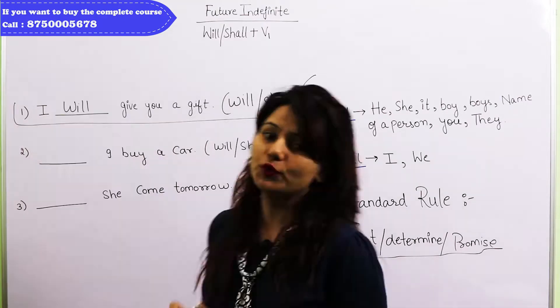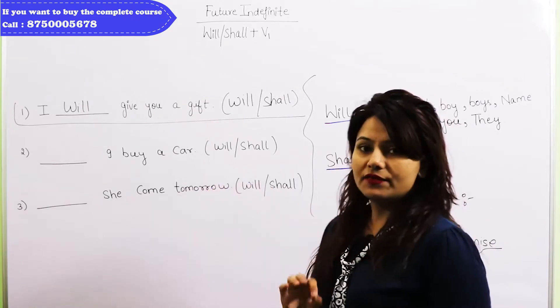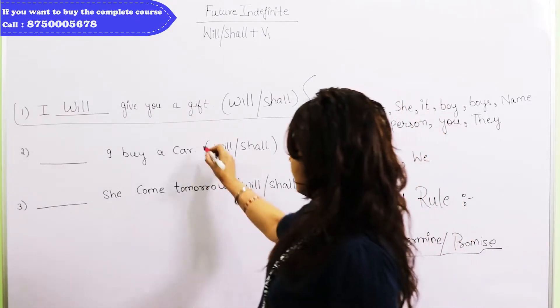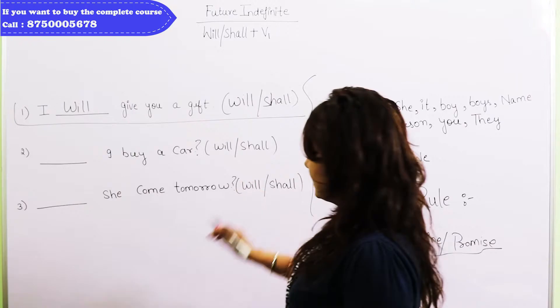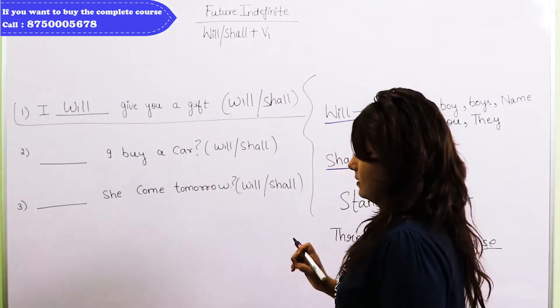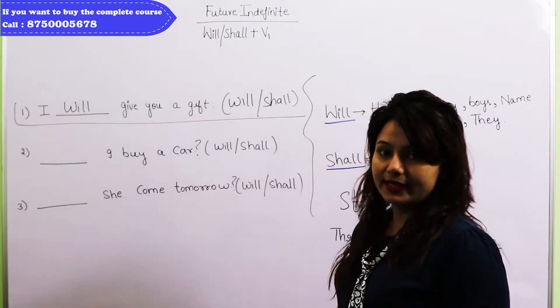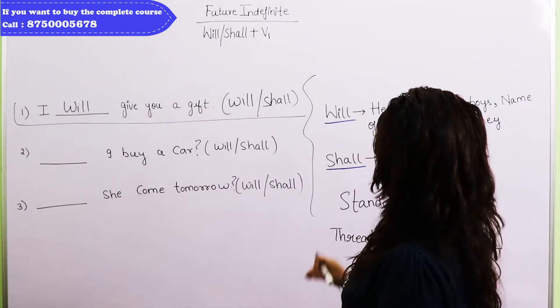But now let's talk about the exam. The future-related errors in our exam, they come in some way. It means that it is only interrogative. Like, these two sentences which I have written is interrogative. Here it says, I buy a car. Will or shall? Do we know the promise or what it is? We don't know anything.